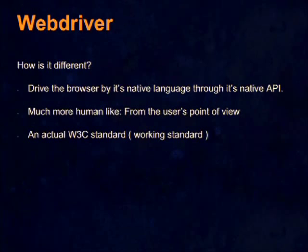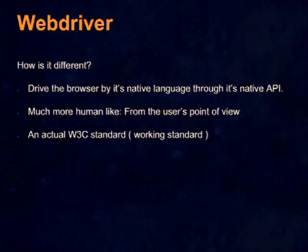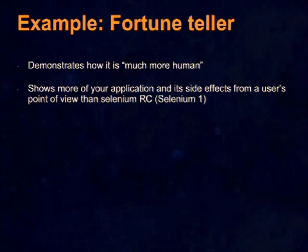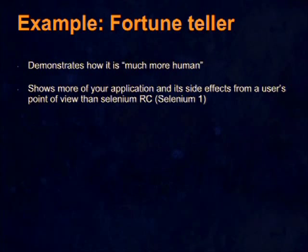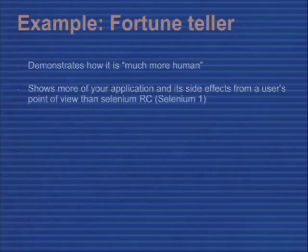I don't want to get too bogged down on the details of architecture. That one statement — 'they're trying to drive it from the user's point of view' — is very important, and it also changes the way you write tests and can break your tests. So I have this simple example called the fortune teller, and what this is going to show is the concept in practice: Selenium 1 versus Selenium 2, and some of the side effects of writing in Selenium 1 — how you can actually have tests that pass that shouldn't pass.